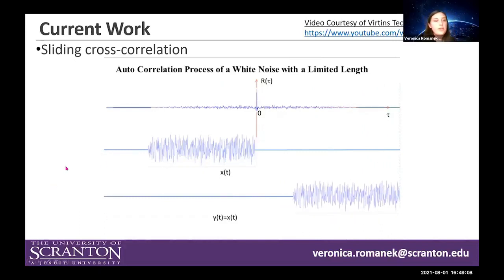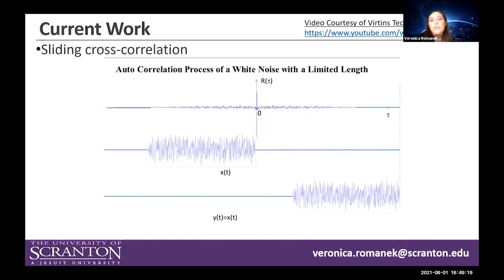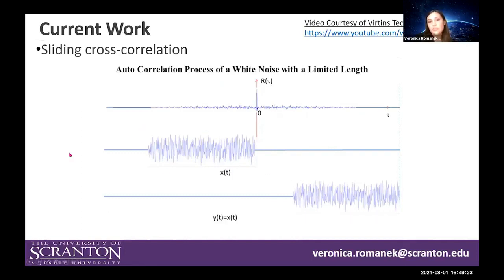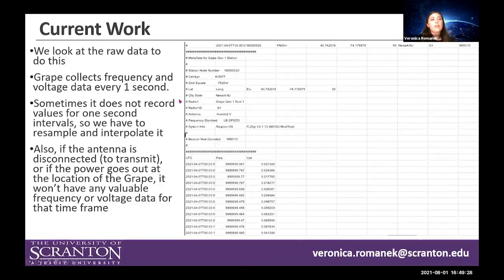That shows pretty nicely what we're trying to do here. Instead of those two signals, we would be looking at the Doppler-shifted carrier frequencies received with the GRAPE, and trying to see the correlation between the TIDs. To do this, we look at the raw data.